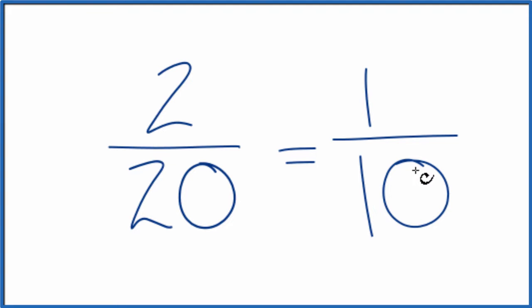And these are equivalent fractions. If you take 2 divided by 20 and 1 divided by 10, you're going to get the same number. It'll be 0.1. It's just that we've simplified 2/20 down to 1/10.